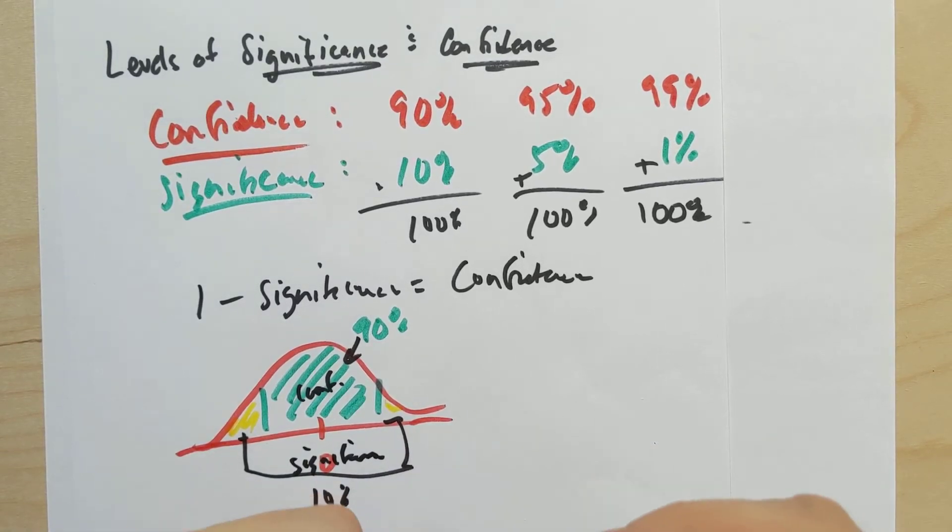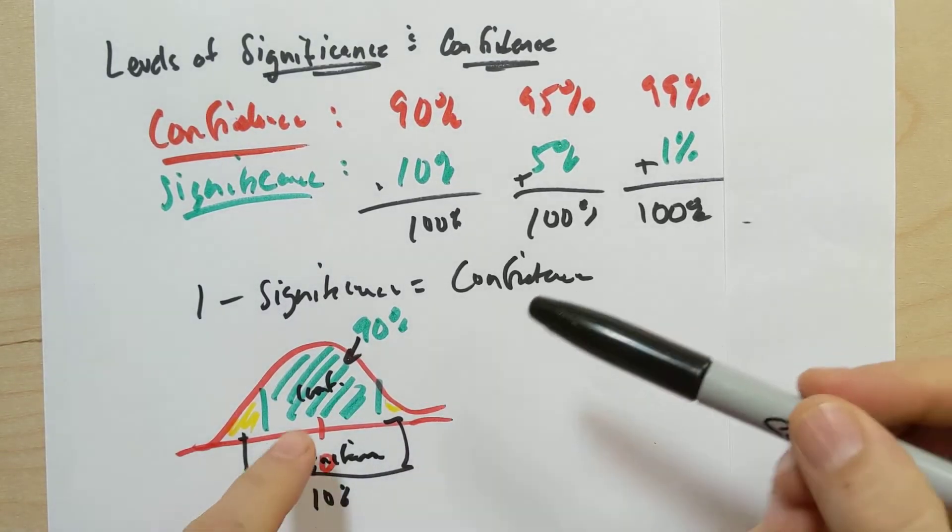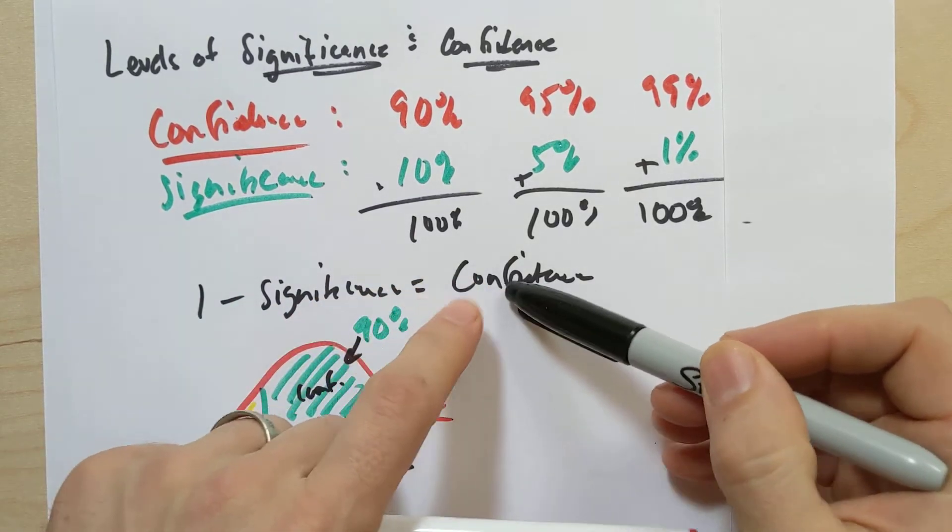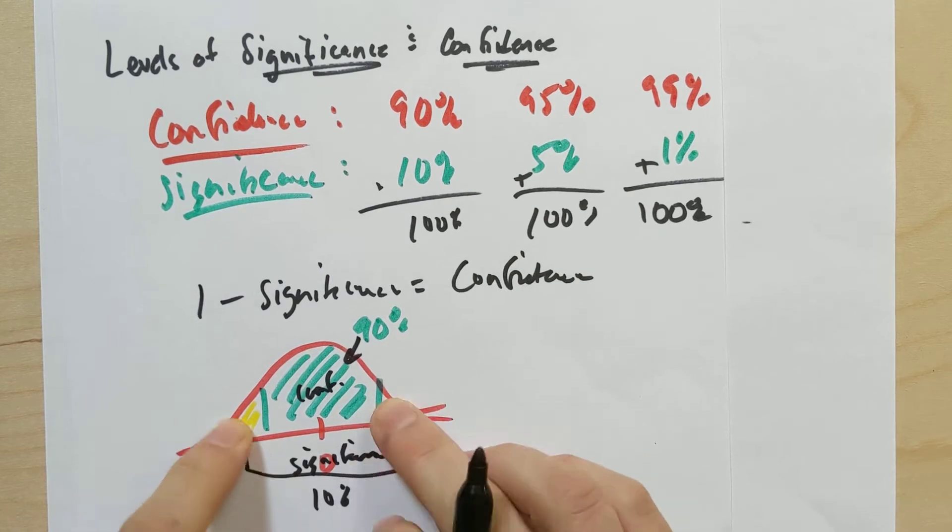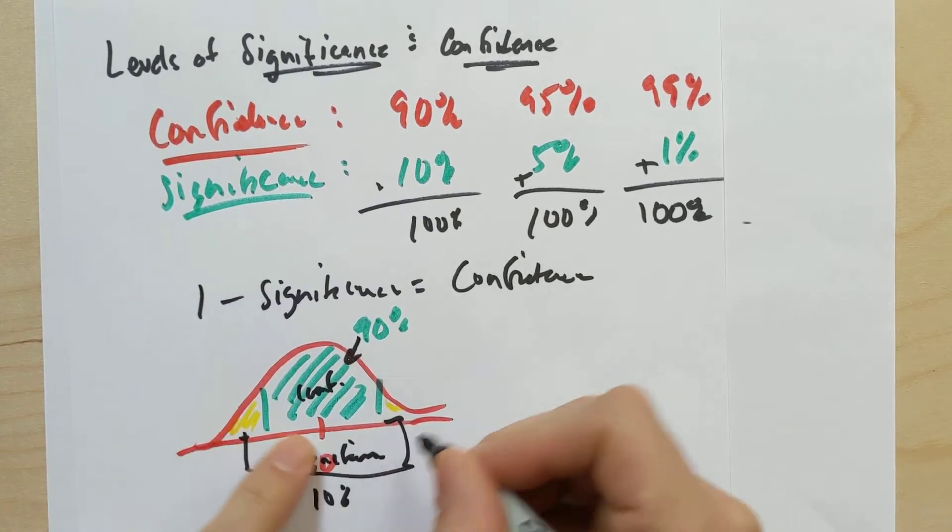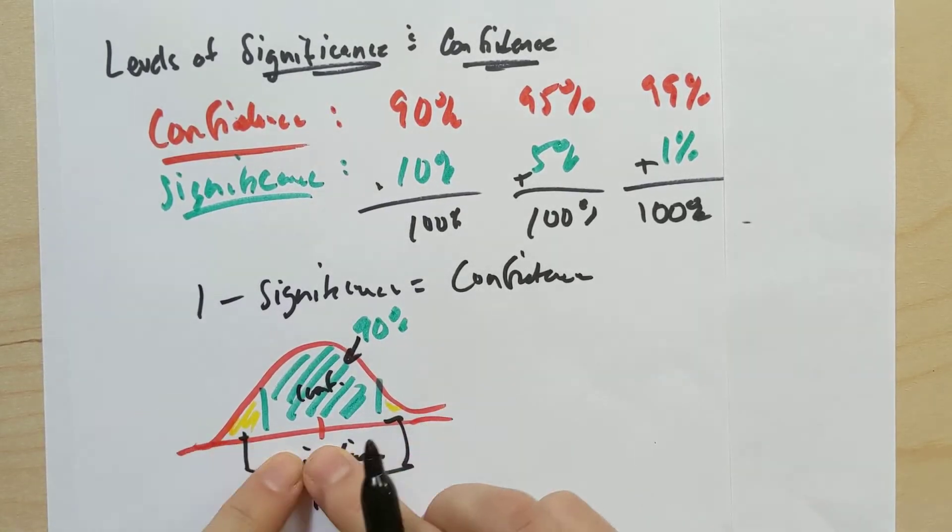And so when, here's the question, when would the level of significance really be the complement to a level of confidence? Well, it had to be in a situation where the level of significance cared about two tails, right?